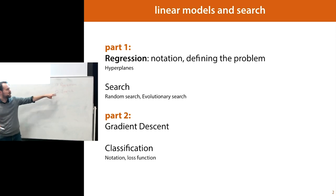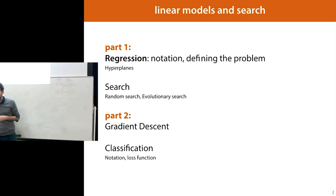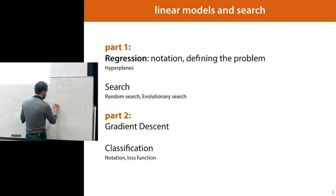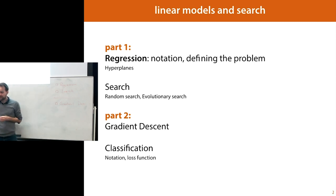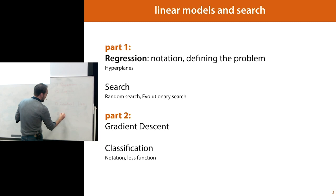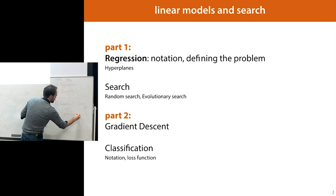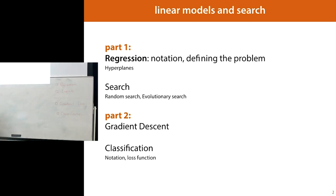In the first half, we'll discuss some simple search methods that build up to gradient descent. After the break, we'll go into some proper calculus and describe actual gradient descent. Then we'll finish up by explaining how all of this works for classification, which requires some subtle technical points. That's why we start with regression.